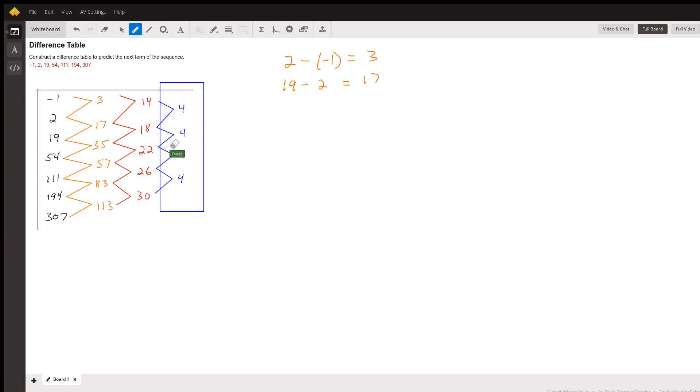So if we were going to have the next term, it would have to continue on, we'd have another difference here. And we just work backwards. So we create another difference. And we know that that difference is going to be 4. So instead of 30, we're going to have 34.